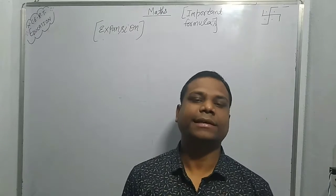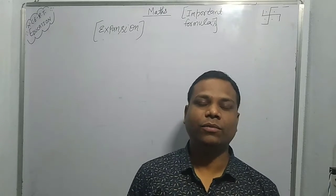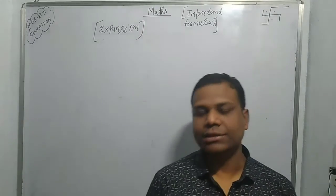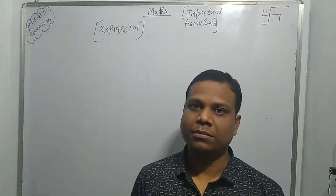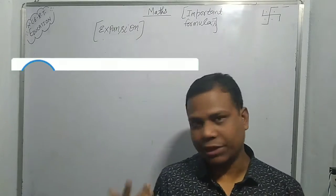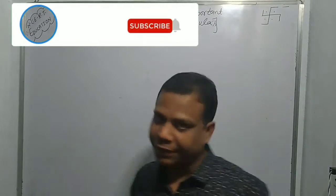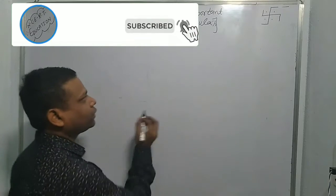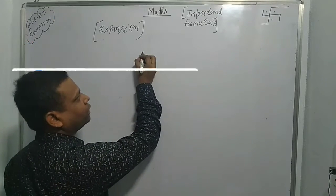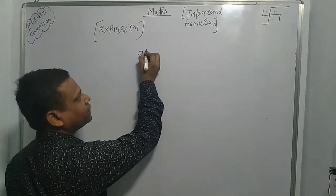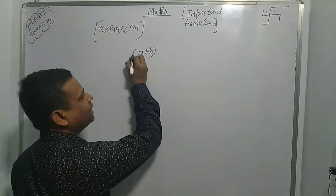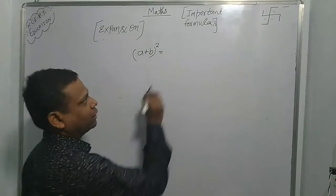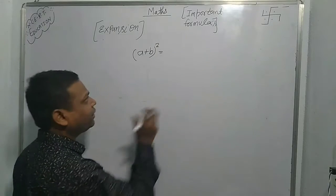Hello students. In this video I explain some important identities — expansion — of the chapter on expansion in mathematics. Let's start. The first chapter formula on expansion is very easy and important: a plus b whole square.